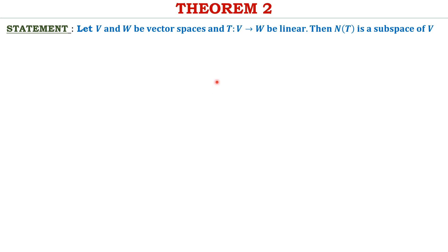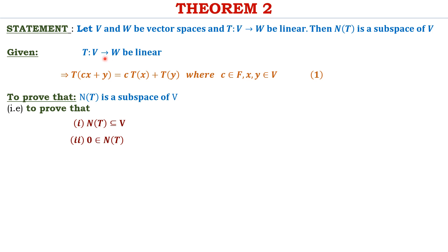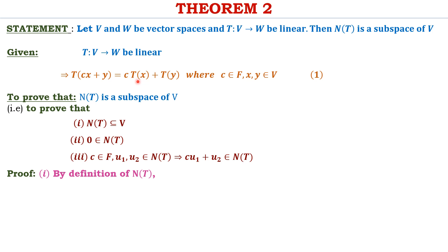Let us now prove another theorem based on null space. The statement reads: let V and W be vector spaces and T from V to W be a linear transformation. Then N(T) is a subspace of V. Since T is linear, we have T of CX plus Y equal to C times T of X plus T of Y, which we call equation 1. We need to prove that the null space is a subspace of V.